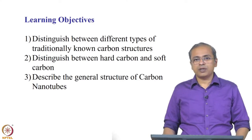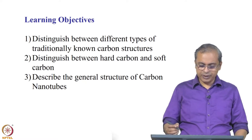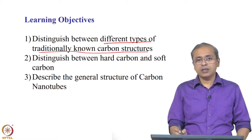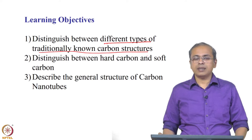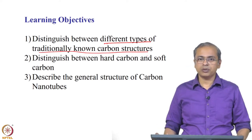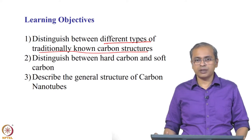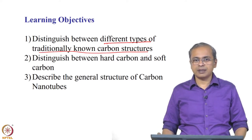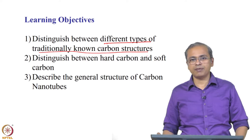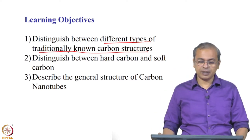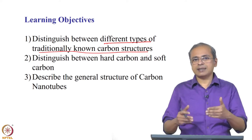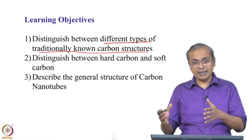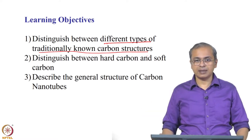Our learning objectives for this class are to distinguish between different types of traditionally known carbon structures. This is something you may have encountered from high school or in college courses. We will take that discussion a little deeper, so that you can use it to better understand the nanostructures of carbon that we will discuss in subsequent classes.